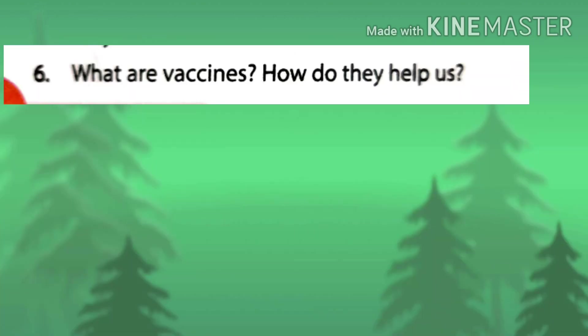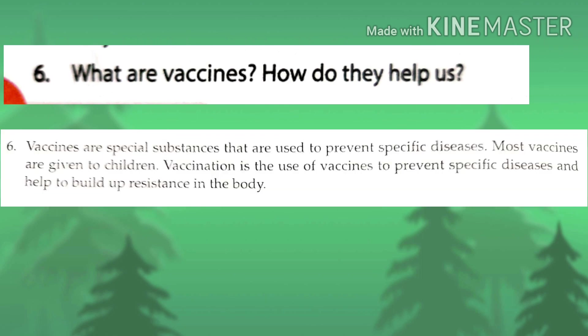Last question: what are vaccines and how do they help us? Vaccines are special substances used to prevent specific diseases, and most vaccines are given to children. Vaccination helps build up resistance in the body by developing our immune system so that our body can fight against diseases by itself. Write all objective-type exercises in the textbook itself, and question answers in the fair book.